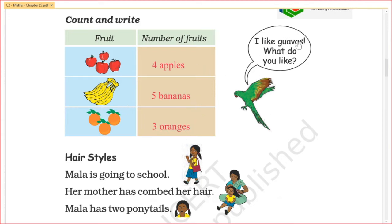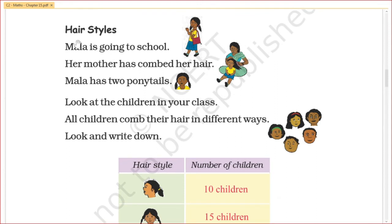Mala is going to school. Her mother has combed her hair. Mala has two ponytails. Look at the children in your class — all children have combed their hair in different ways. Look and write down the hair styles.